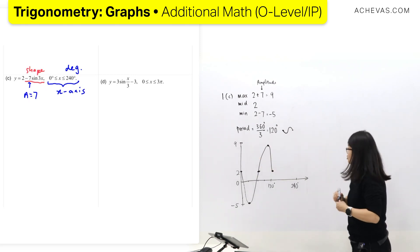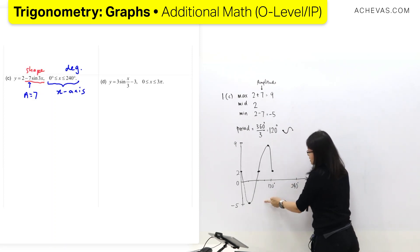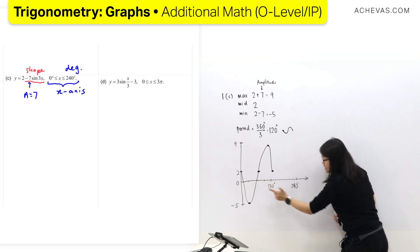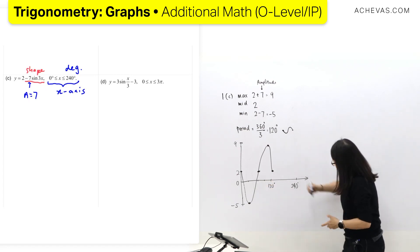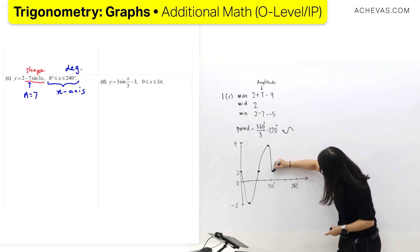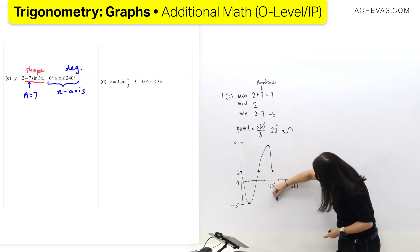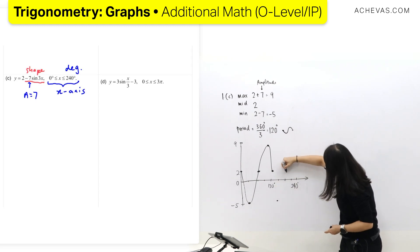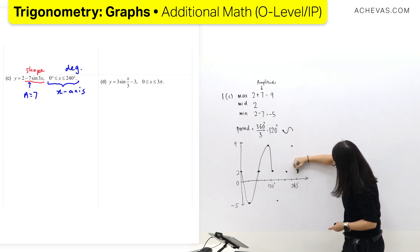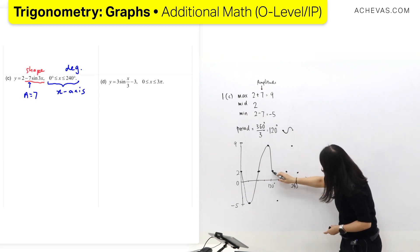I need to draw this graph for 120 degrees — that's one full sine graph. Then I draw it one more time from 120 to 240. I split this into four quadrants and start plotting: go down, come back to two again, go up to a maximum, and come back to two. So I draw another sine graph from here.